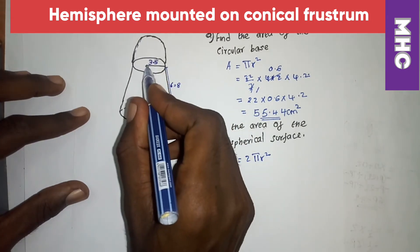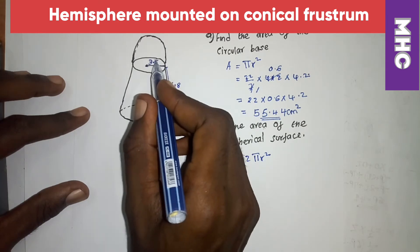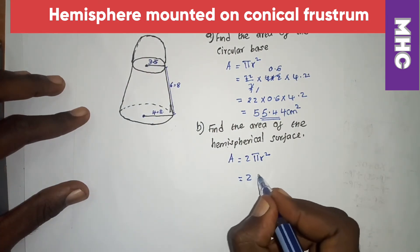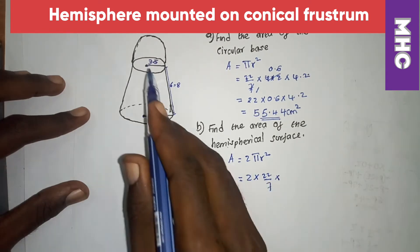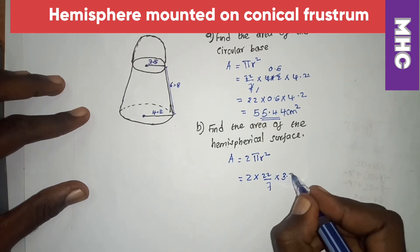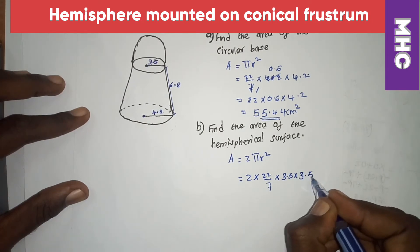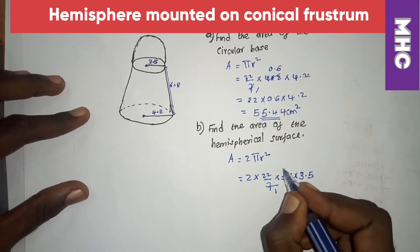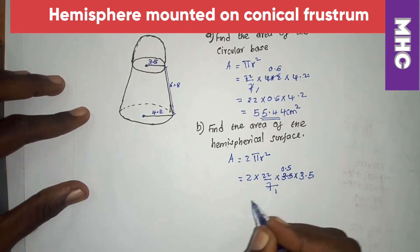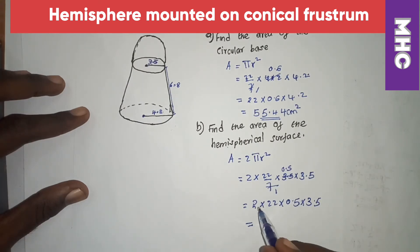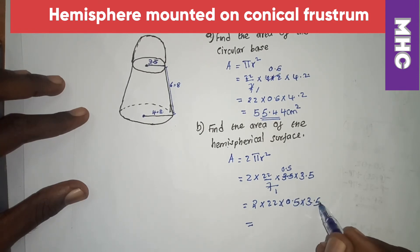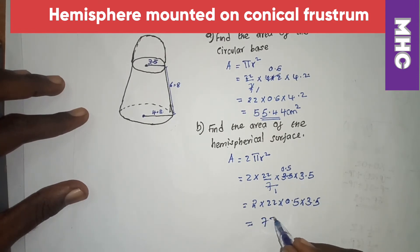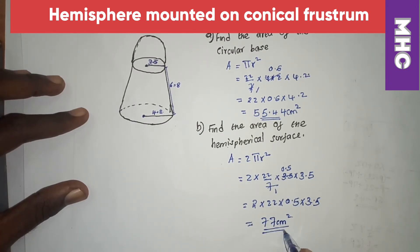The top part is our hemispherical portion and therefore our radius is 3.5 cm. Our area = 2 × (22/7) × 3.5 × 3.5. Simplifying: (1/7) of 3.5 = 0.5, then 2 × 22 × 0.5 × 3.5 = 77 cm² as our hemisphere surface area.